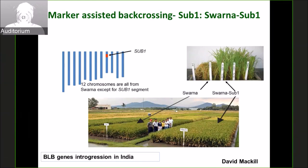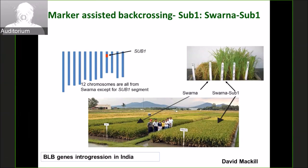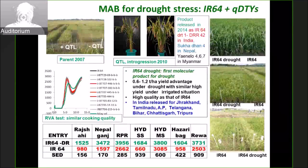Sub-1 changed the way we tackle abiotic stresses. There were people working on abiotic stresses and major genes, but Sub-1 was probably the first example where we learned how to tackle abiotic stresses effectively. It took 14 years to identify Sub-1 and develop the Swarna Sub-1 variety. I don't think we will have 14 years to do that anymore. Similarly with drought — the lessons we learned — we identified QTLs for drought, and it took us 10 years to bring varieties for drought tolerance that are now cultivated by farmers.